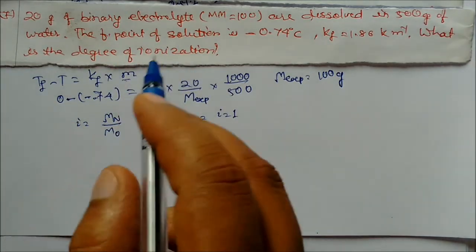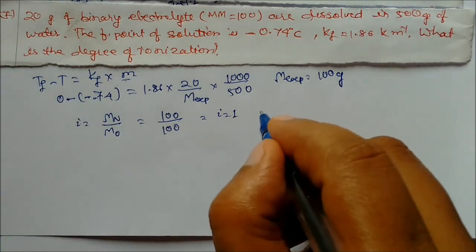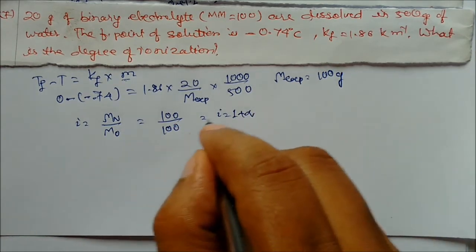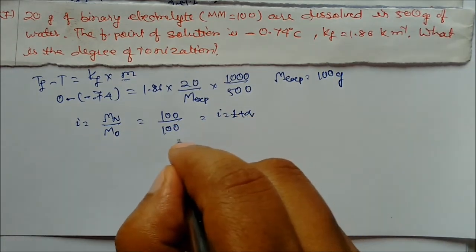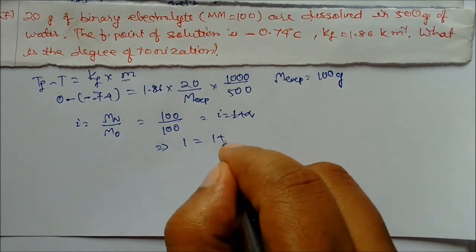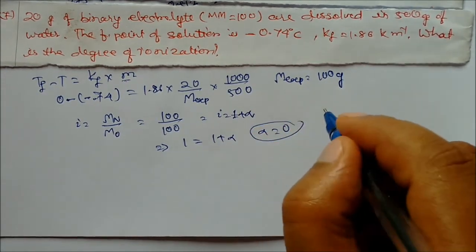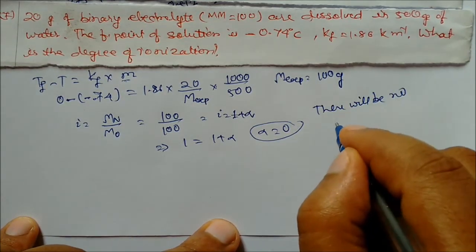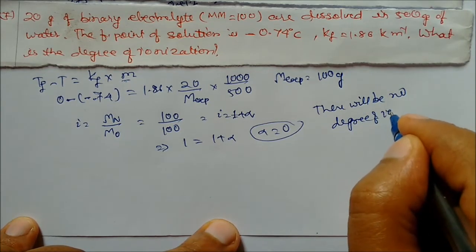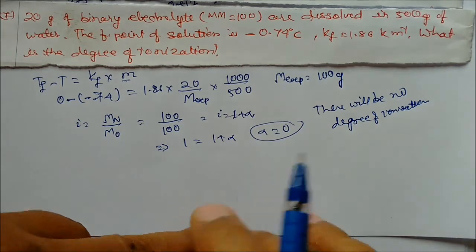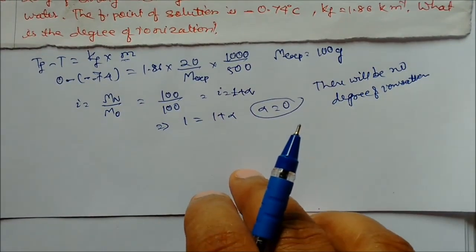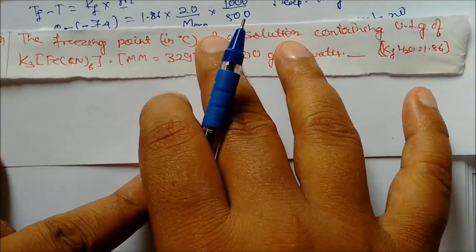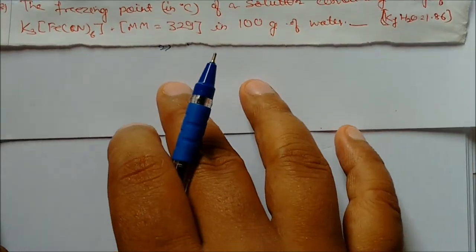Since i = 1, and i = 1 + alpha for a binary electrolyte, alpha = 0. This means no dissociation or association takes place for this electrolyte.